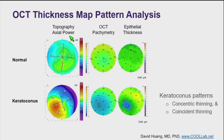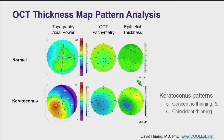Our diagnostic system also includes human inspection of the map patterns. The patterns to look for in keratoconus are: one, concentric thinning, and two, coincident thinning. By concentric thinning, I mean looking at the epithelial thickness map and finding a central area of thinning surrounded by rings with at least a two-color transition. Then look at the pachymetry map for focal thinning at the same place, with a minimum either at the same sector or an adjacent sector.